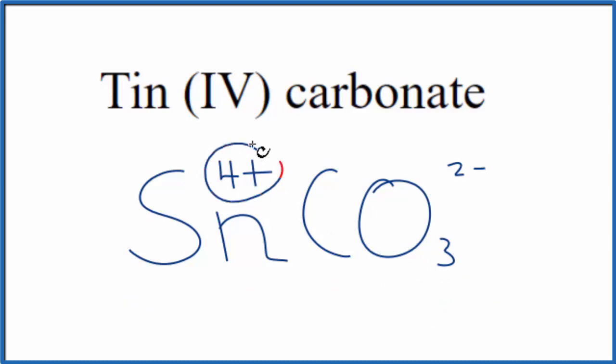So these charges here, they need to add up to zero, give us a net charge of zero. Right now, they don't. If we had two of these carbonate ions, 2 times 2 minus, that's 4 minus. 4 minus and 4 plus, that would add up to zero.